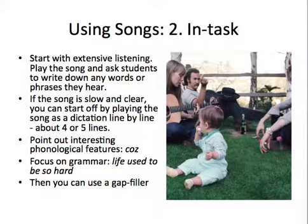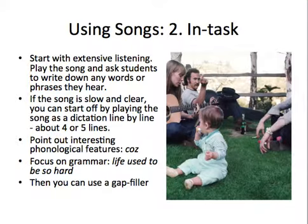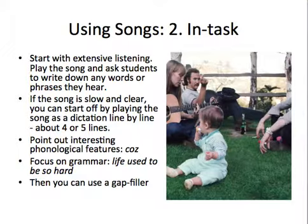Once we've set it up, we can go to the in-task. This particular song is ideally suited for a little bit of dictation. But before that, I suggest starting with some extensive listening — play the song and ask students to write down any words or phrases they hear, just a word or a phrase, not complete sentences. Because it's pretty slow and clear, you can then play the song as a dictation and do about four or five lines. You don't want to do too much, but just enough to stretch them. When doing this, you can point out interesting phonological features — the kinds of rules of fast speech, elision and liaison.